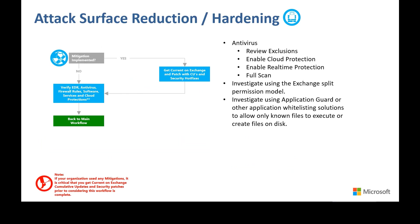With attack surface reduction and hardening, it is important to note that in today's threat landscape, simply having antivirus is typically not enough. Having an EDR solution that allows you to monitor processes and behaviors is critical to alerting and finding malicious activity on your network. If your organization does not currently use an EDR solution, you should investigate installing it at a minimum on your tier-zero assets such as Exchange and identity solutions. You will want to enable real-time protection along with cloud protection for your antivirus applications. Run a full scan of the system with exclusions bypassed, much like in the remediation phase.